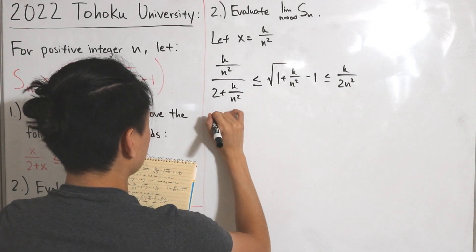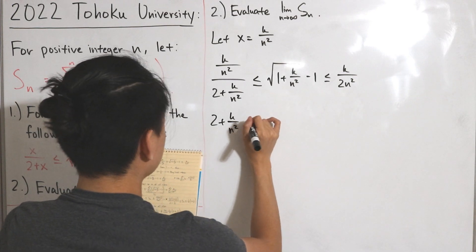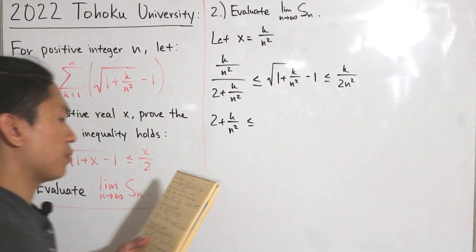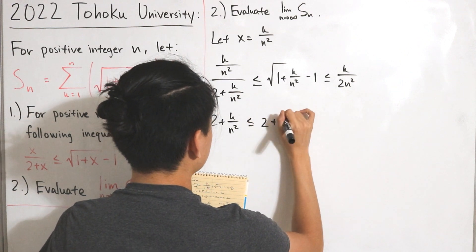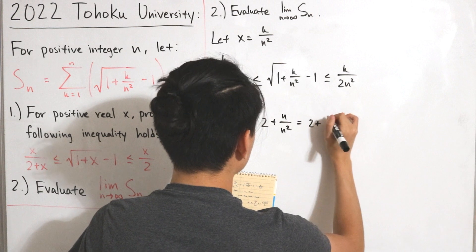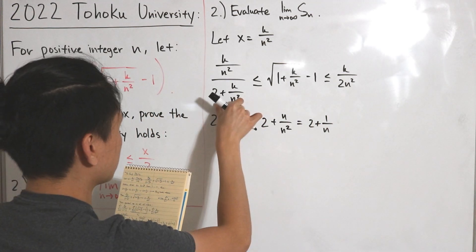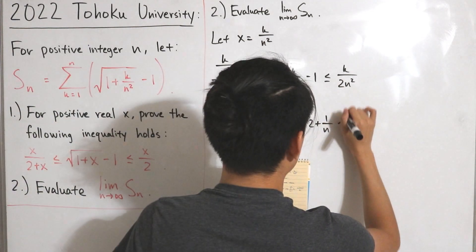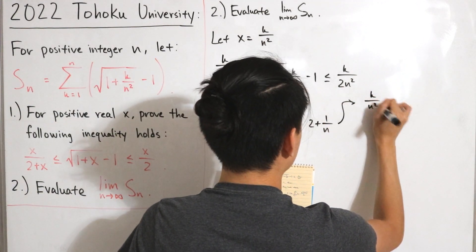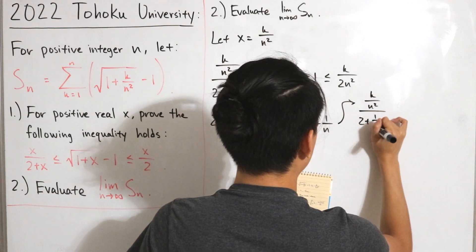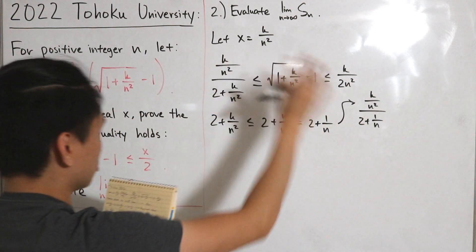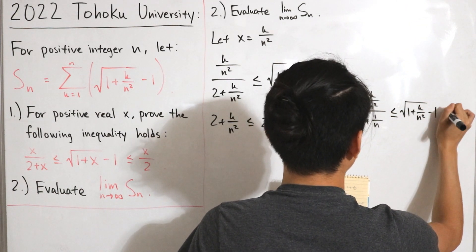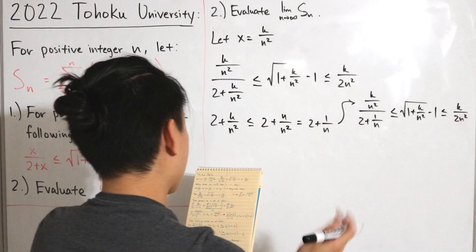To handle the denominator issue, we note that for k running from 1 to n, we have 2 + k/n² ≤ 2 + n/n² = 2 + 1/n. So we can replace the denominator with 2 + 1/n, making the left side smaller, maintaining the inequality direction. This gives: k/n² · 1/(2 + 1/n) ≤ √(1 + k/n²) − 1 ≤ k/(2n²).